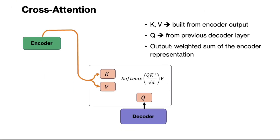This diagram shows cross-attention between encoder and decoder. Here the query comes from the representation of the decoder while the keys and values come from the encoder representation. The query-key matching — that is QK transpose — determines which tokens from the input sequence the decoder must attend to, and softmax of QK transpose defines the weights. Finally, this attention layer outputs a weighted sum of the encoder representations.